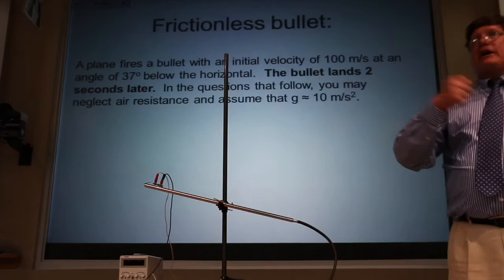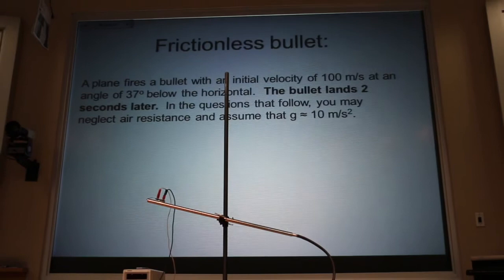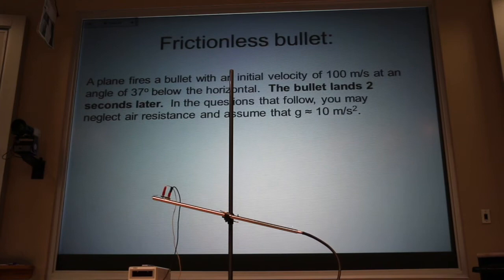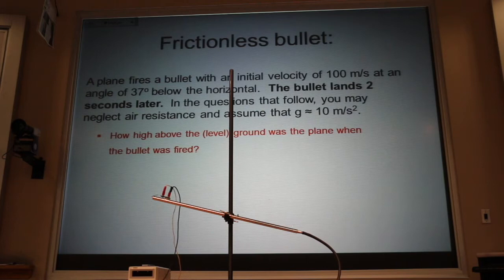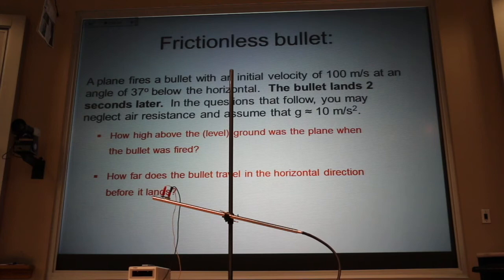Now let's look at the problem you turned in today. Many of you had it wrong — that's okay, you want to make those mistakes before the midterm. A plane fires a bullet with an initial velocity of 100 meters per second at an angle of 37 degrees below the horizontal. The bullet lands two seconds later. Ignoring air resistance with G equals 10 meters per second squared, find how high above the ground the plane was. Many of you said 120 meters — that's not right. How far does the bullet travel horizontally? Many of you said 160 meters — that's right.